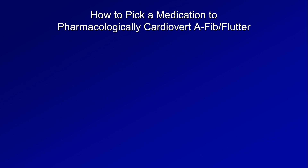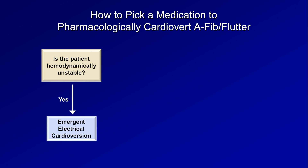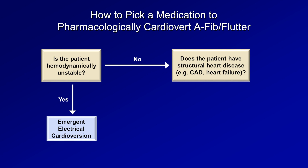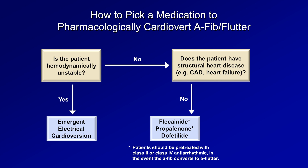The next scenario: how to pick a medication to pharmacologically cardiovert AFib or AFlutter. The first question is whether the patient is hemodynamically unstable. If yes, don't mess with drugs — just do an emergent electrical cardioversion. If they are stable but you still want to cardiovert them due to symptoms of palpitations or a difficult to control ventricular rate, you need to consider whether the patient has structural heart disease, which refers not just to CHF and LV dysfunction, but also coronary artery disease and sometimes even moderate to severe LVH. If there's no structural heart disease, then the 1C agents flecainide and propafenone are options, as well as the class III drug dofetilide. An important caveat is that patients started on flecainide or propafenone should be pre-treated with a class II or class IV antiarrhythmic in the event the AFib converts to AFlutter.